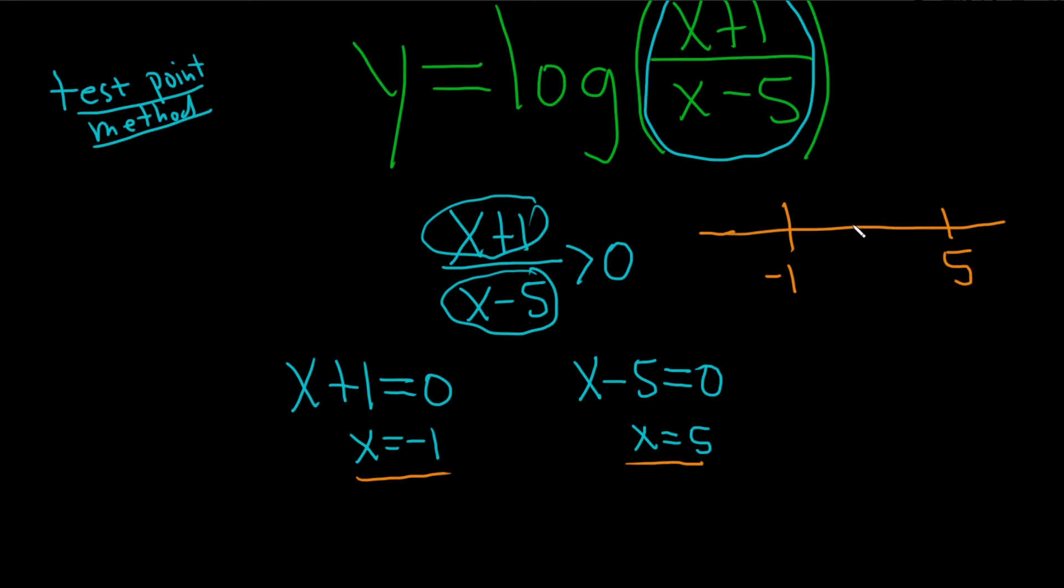Then you pick a number between negative 1 and 5 and plug it into this. If it's true, you shade. If it's not true, you don't shade. Then you pick another number greater than 5 and plug it in again. If it's true, you shade. If it's not true, you don't shade.